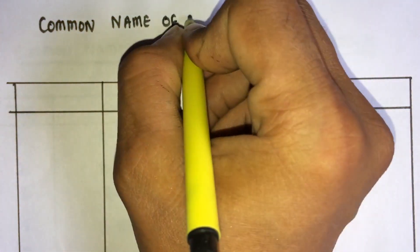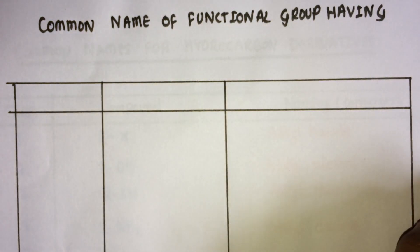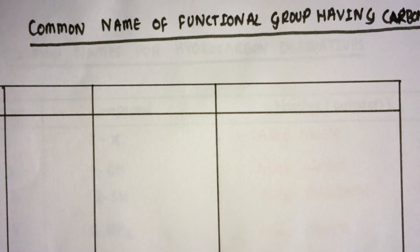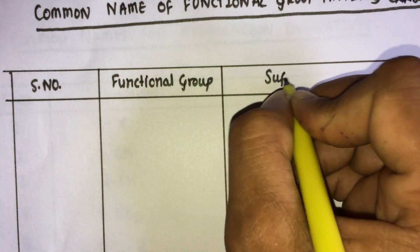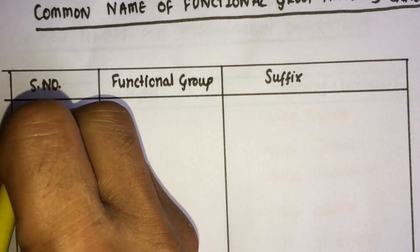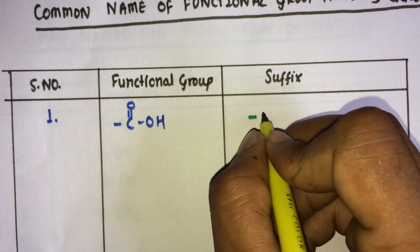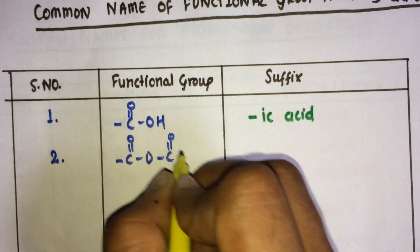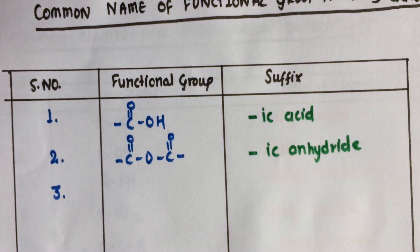There are certain rules for the naming of functional groups. Common names of functional groups having a carbon atom: carboxylic acids have the suffix '-ic acid'; acid anhydrides have the suffix '-ic anhydride'.